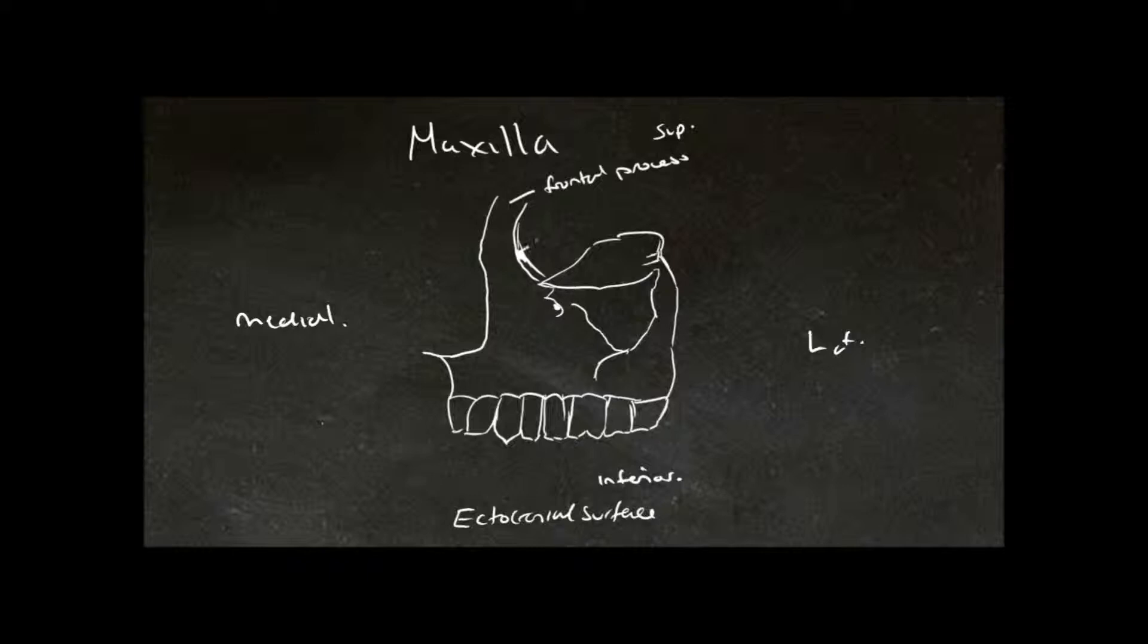Here we have what is known as the lacrimal groove. We have the orbital plate. We have the zygomatic process for articulation with the zygomatic bone. We have the infraorbital foramen, and this is for the transmission of the infraorbital nerve as well as the artery and vein.